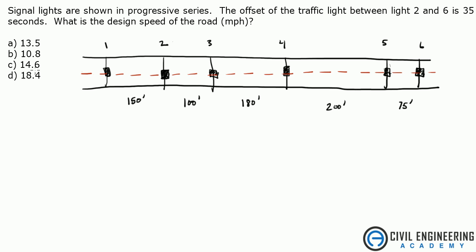And what we're given is answers A through D. Given this beautifully drawn diagram, traffic lights 1 through 6 are shown on top with distances on the bottom.